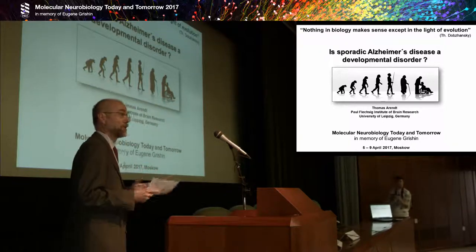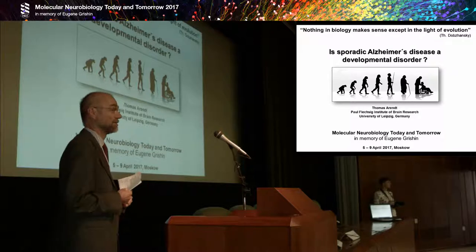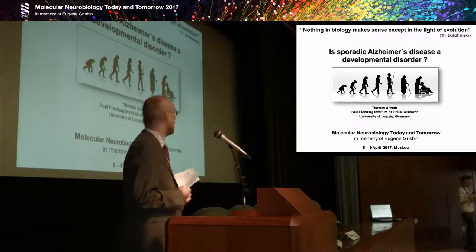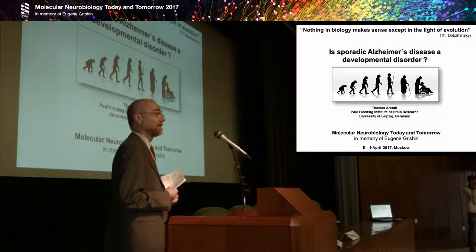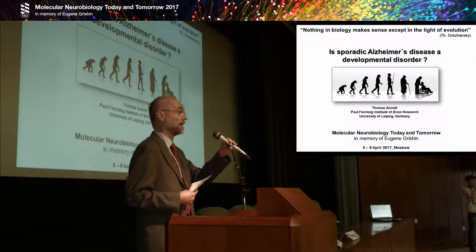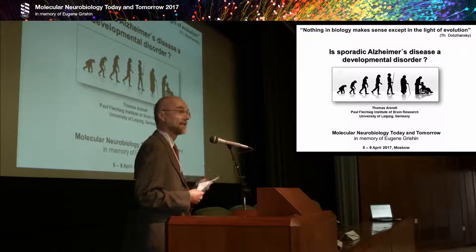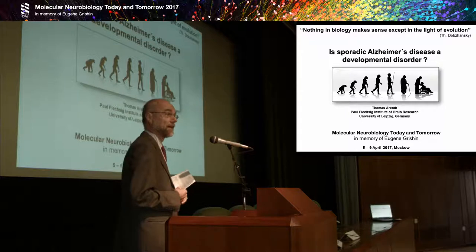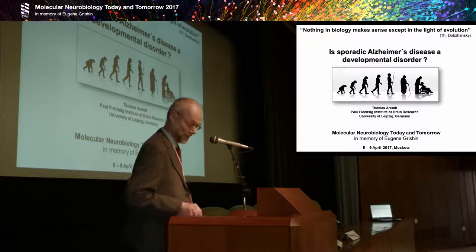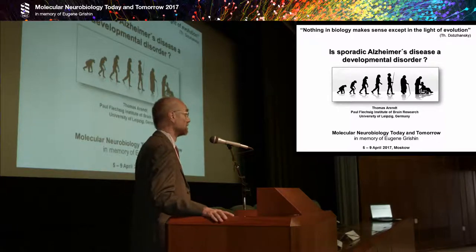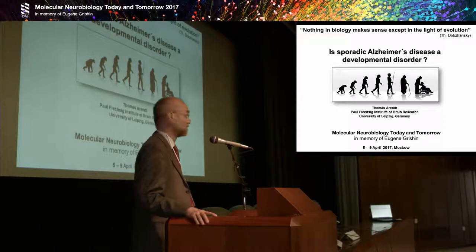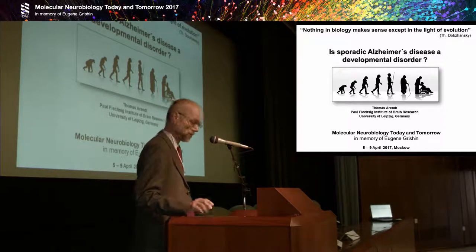We are now slightly changing the topic, moving away from toxins to human diseases of the brain. What I would like to present within the next 20–30 minutes is to summarize some evidence that sporadic Alzheimer's disease — and I have to emphasize I'm talking about sporadic Alzheimer's disease, not the familial form — might well be an interesting topic for developmental and evolutionary biologists.